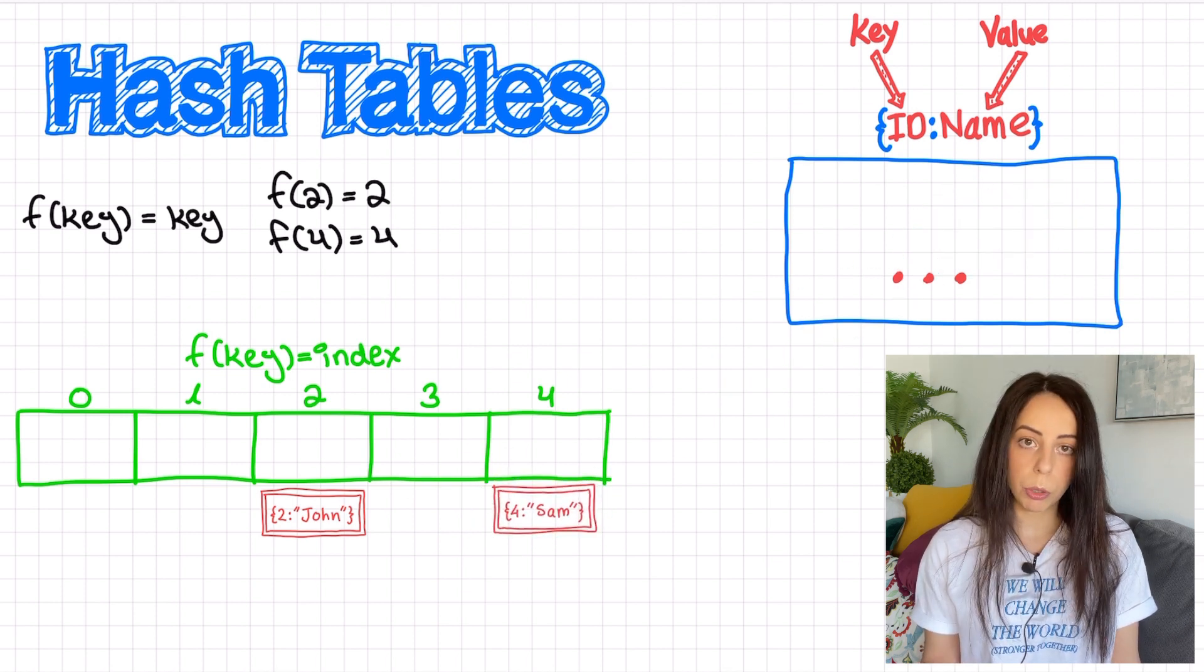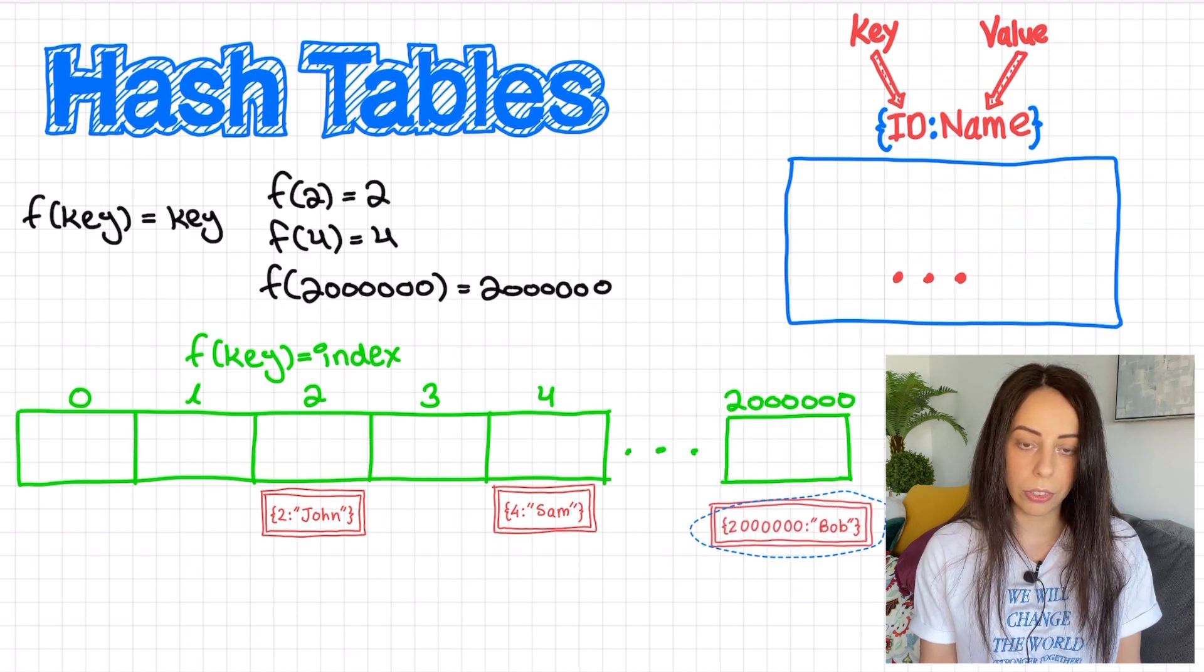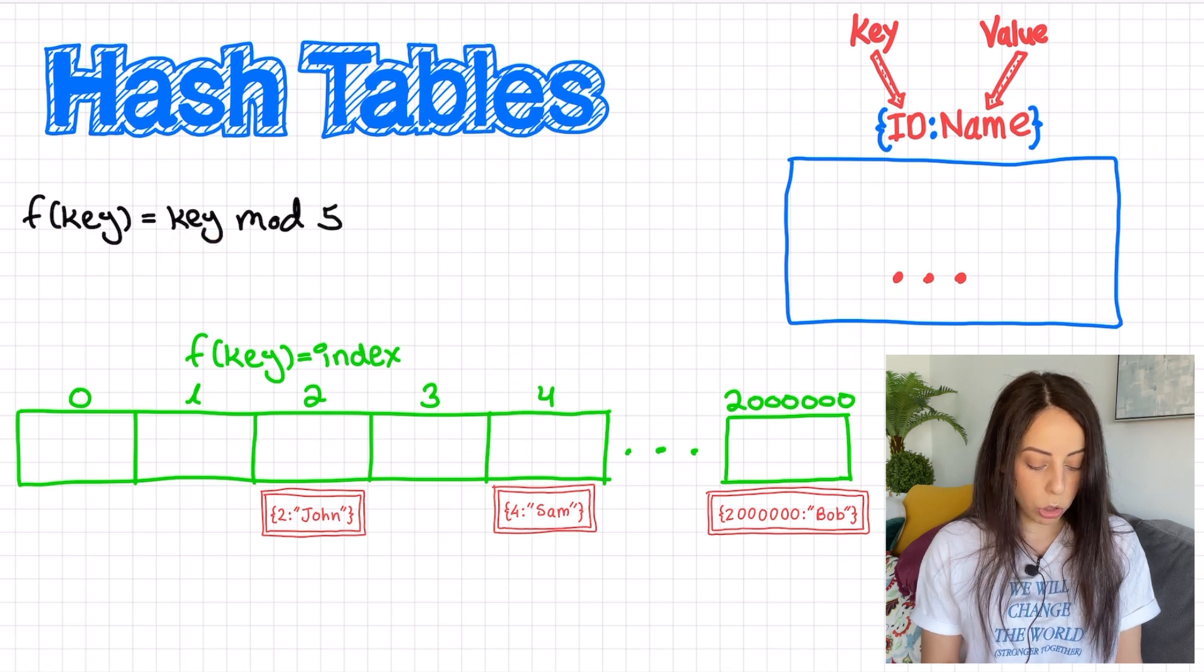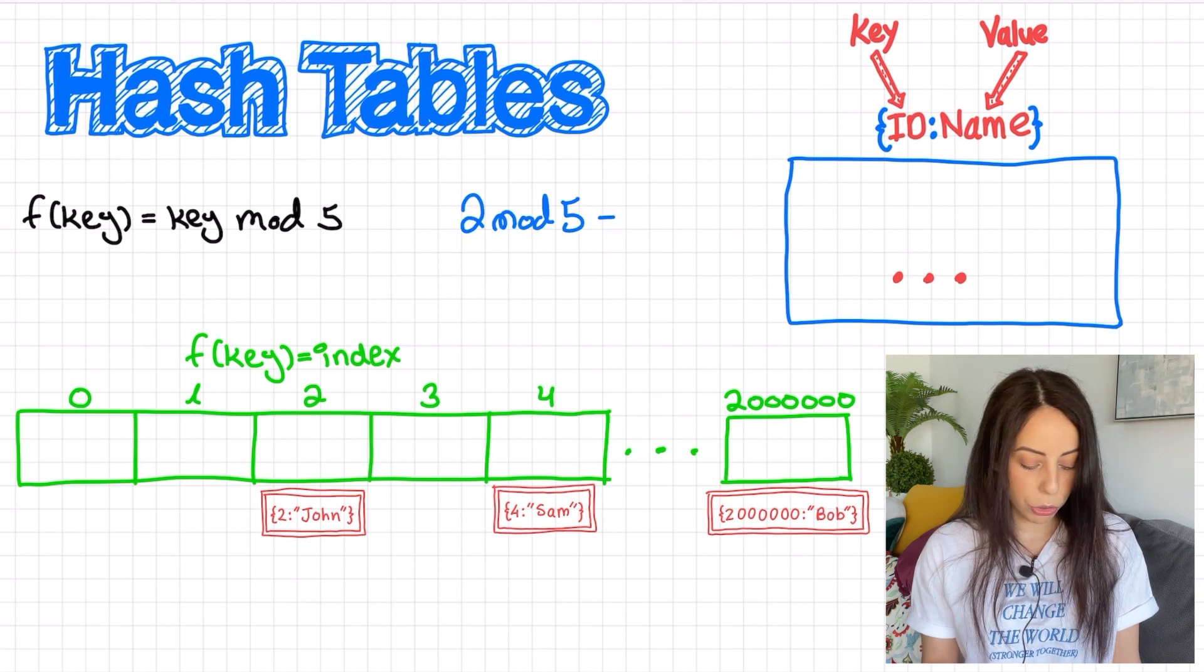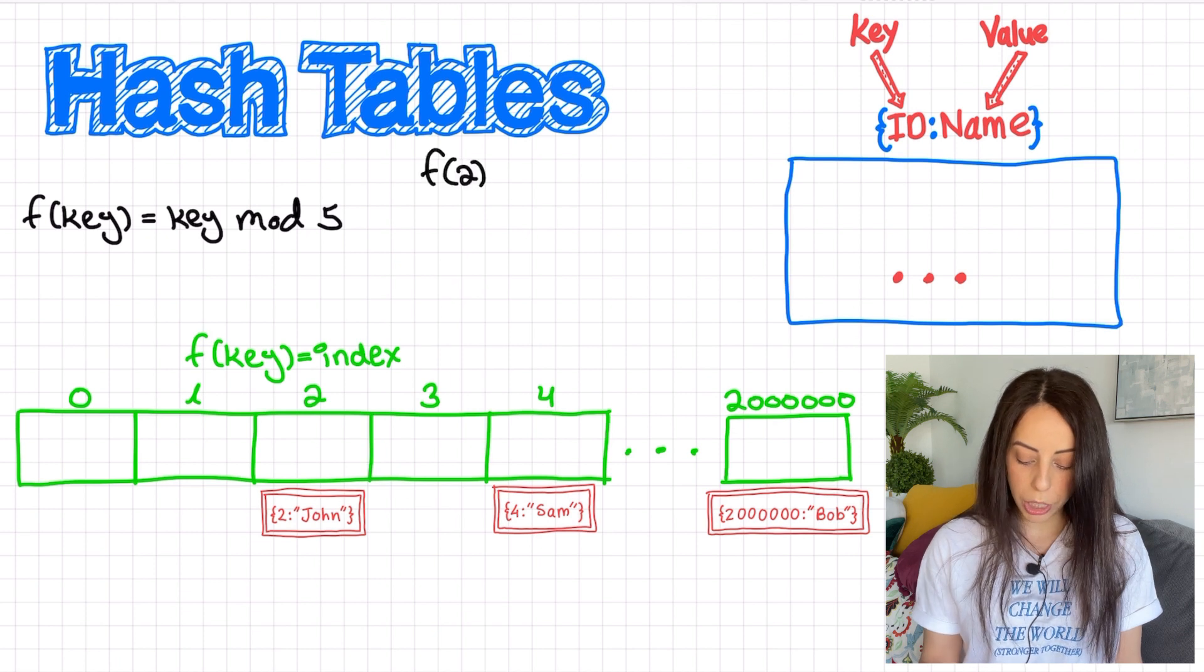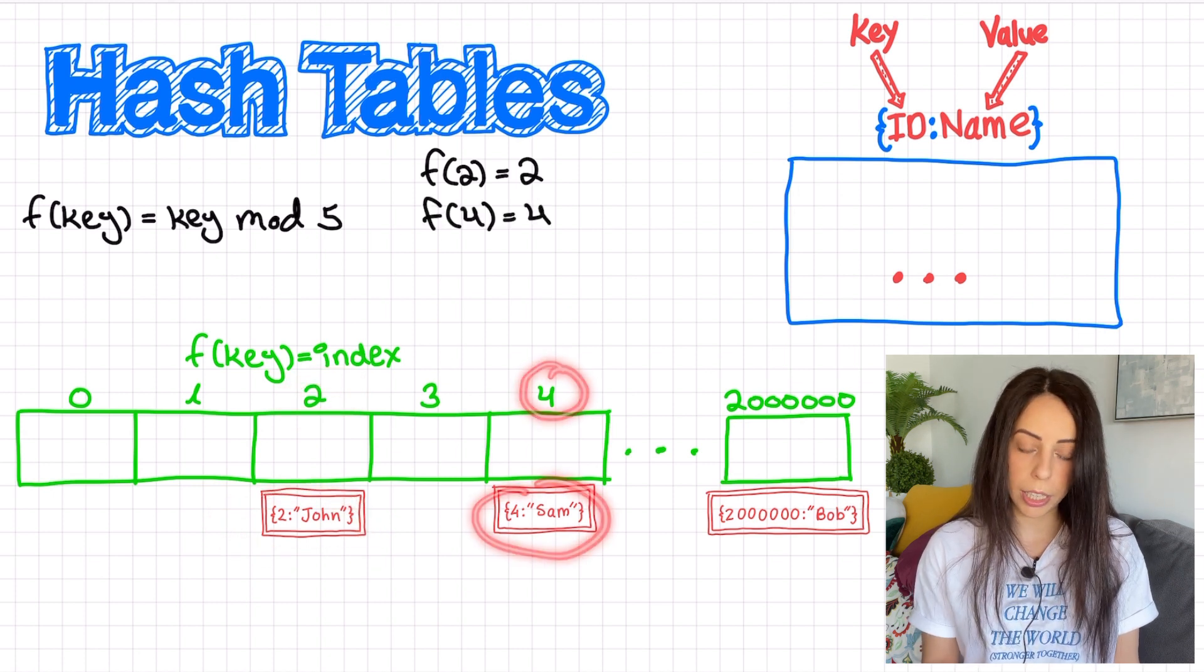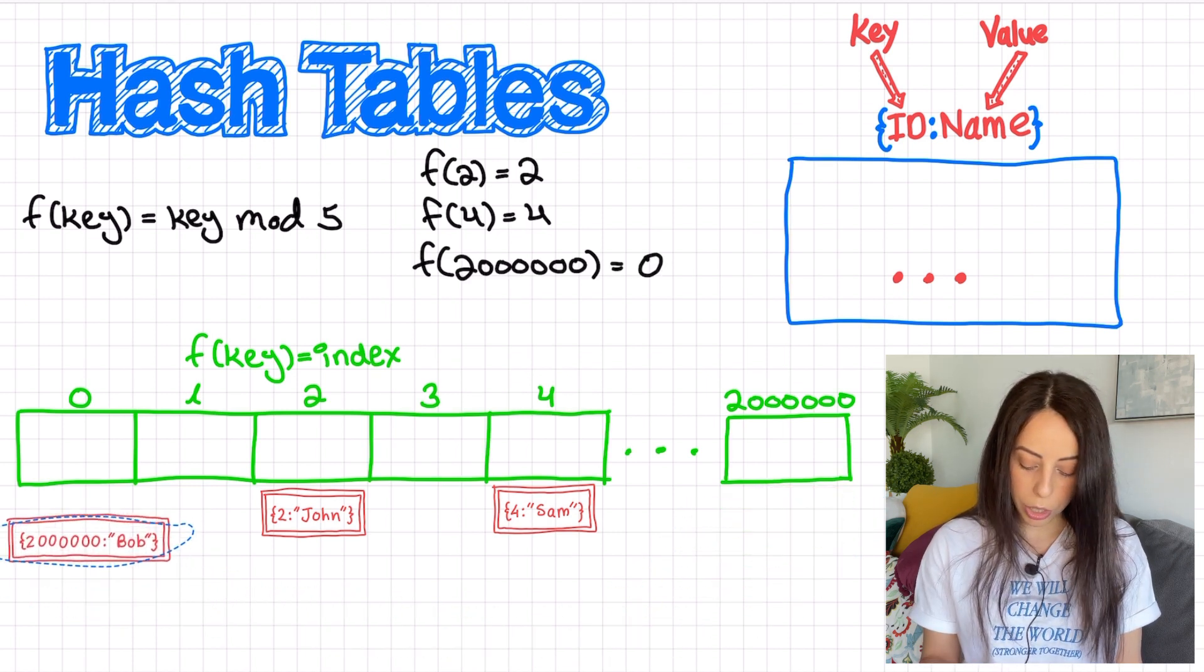It works well for now, right? But what if I also add this element? Now the array has to be huge, it has to have more than 2 million cells. So one possible solution for this is to change the hash function from key to key mod 5. The mod operation returns the remainder of a division. So for example, 2 mod 5 is 2, because that is the remainder when dividing 2 by 5. So the hash code for key 2 is still 2, which means that John stays at index 2. 4 mod 5 is 4, so Sam also stays at his current index. And finally, 2 million mod 5 is 0, moving Bob from index 2 million to index 0.